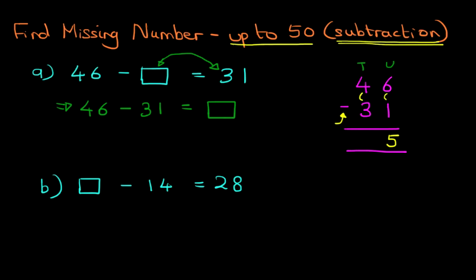Onto the tens, we've got 4 minus 3. 4 minus 3 is 1. And that's our answer, 15. 46 minus 31 equals 15. Go back to the original question. We've got 46 minus 15 equals 31. So the missing number is 15.